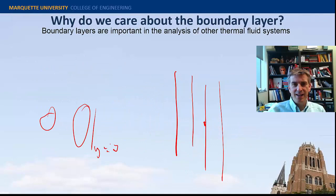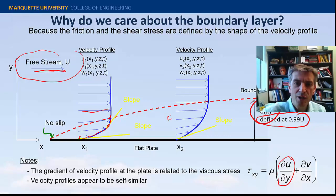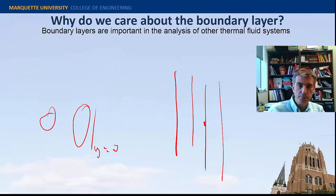The shear stress does not have to be evaluated only at the wall — it can be evaluated anywhere within the gradient. If you're a little particle floating along and subjected to a velocity gradient, you could be sheared or distorted by the shear profile, as described by the Newtonian fluid stress equation.